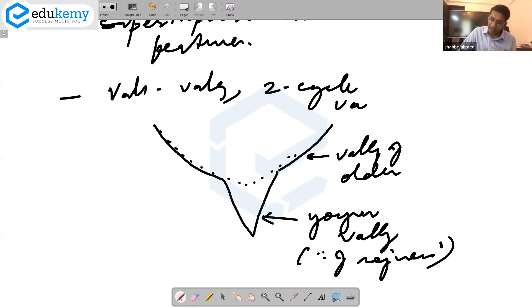And on this, we have a younger valley superimposed. The older valley is at a higher level and the younger one is at the lower level.